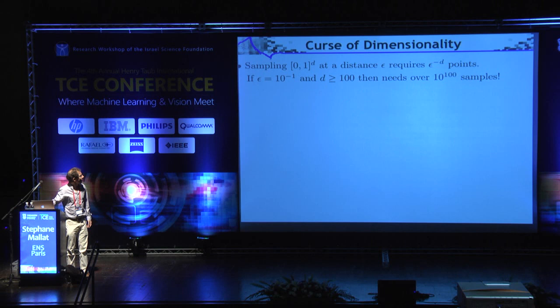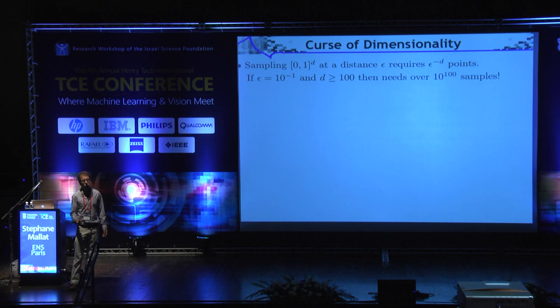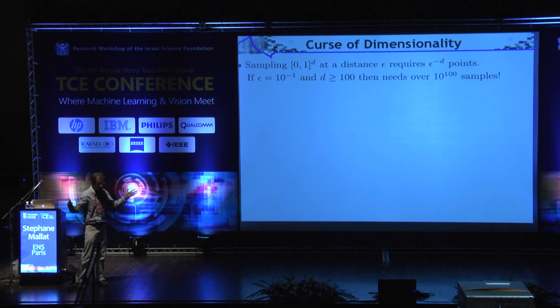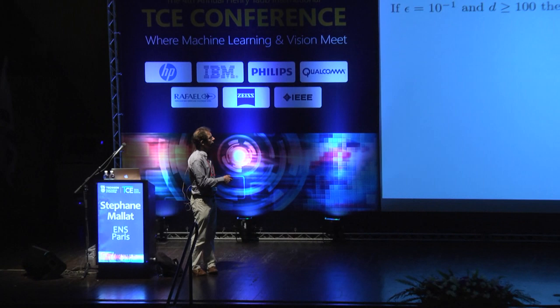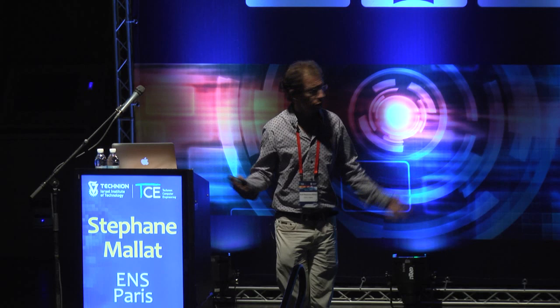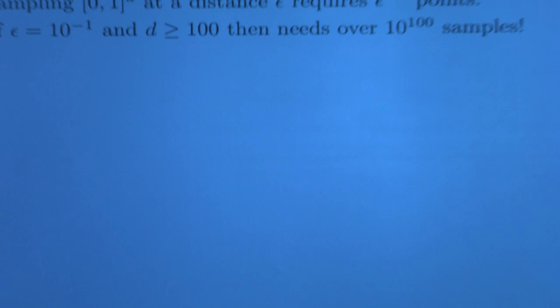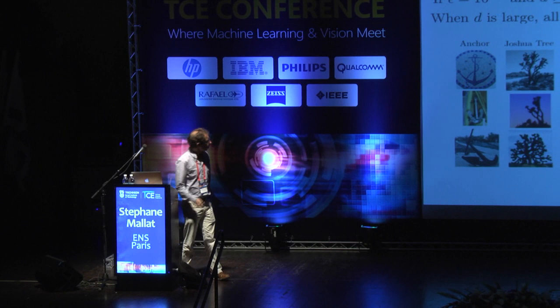This natural idea works very well in low dimensions but has a big problem in very high dimensions. Essentially, in very high dimensions you have no neighbors. If you look at the unit cube in dimension d and want points at distance epsilon, you need on the order of epsilon to the power minus d points. If epsilon is 1/10 and d is larger than 100 — an image has a million pixels — you already need 10 to the power of 100 samples, more than the number of atoms in the universe.